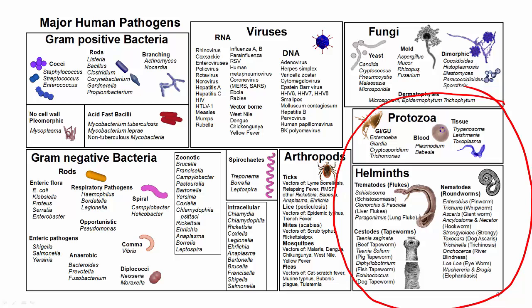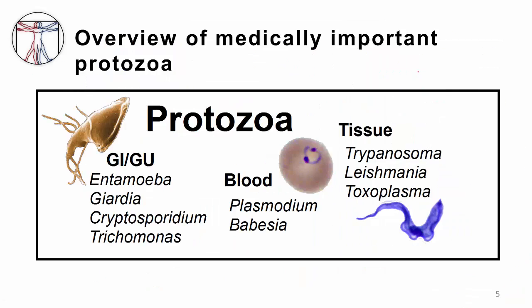This is in contrast to the helminths. The helminths are multicellular organisms — we tend to think of them mostly as worms. They elicit an eosinophilic response. There are multiple different types of white blood cells, and the ones termed eosinophils will often be elevated in patients who have helminth infections, which we don't tend to see in patients who have protozoa infections. This module today will be focusing on the two main species of protozoa that cause infection in the blood: plasmodium, which cause malaria, and babesia, which cause babesiosis.